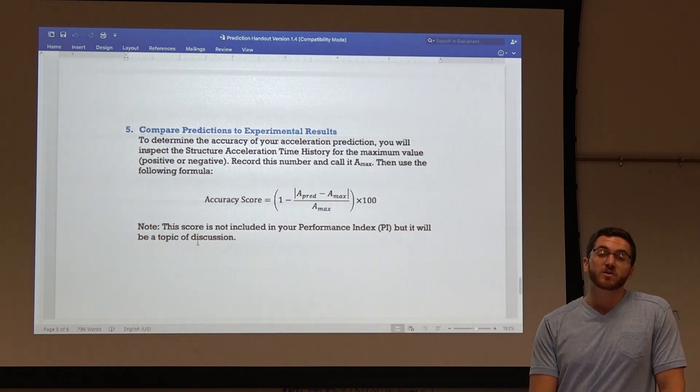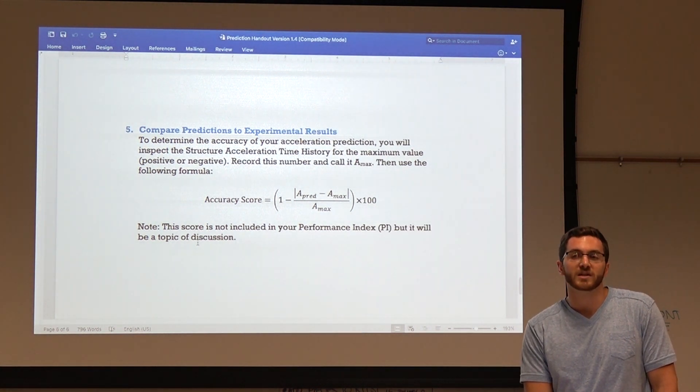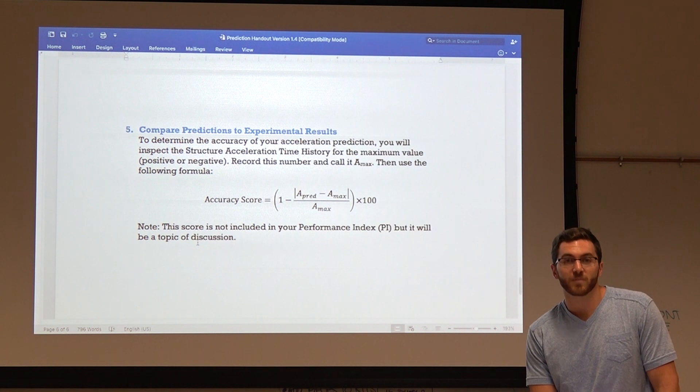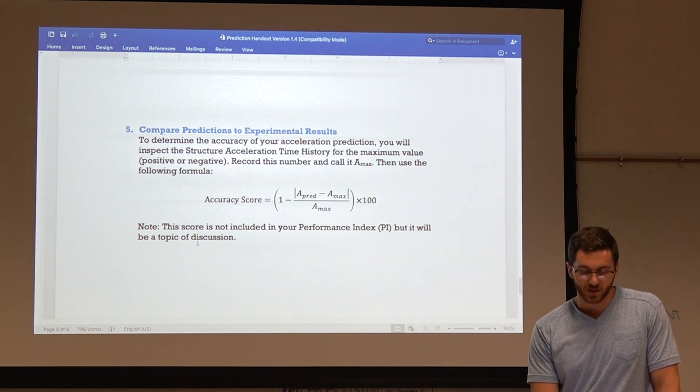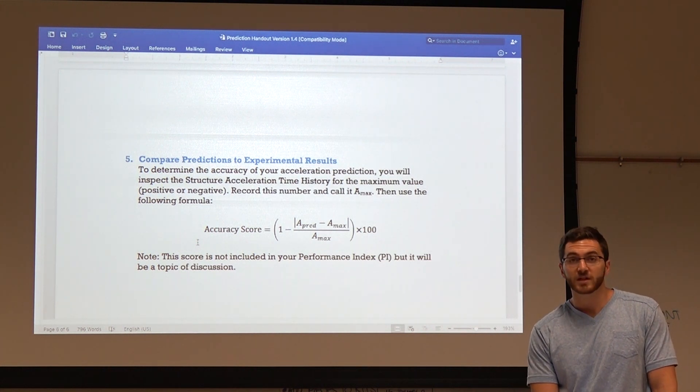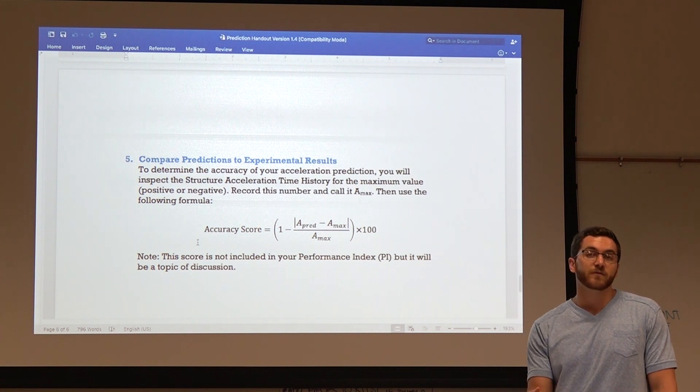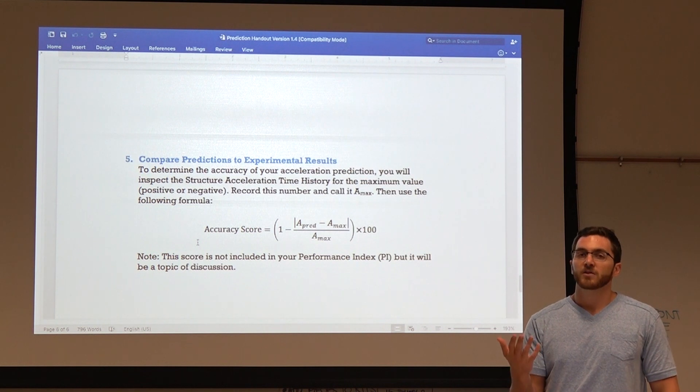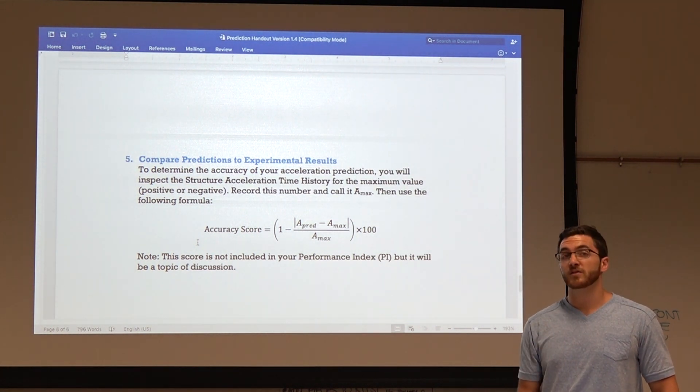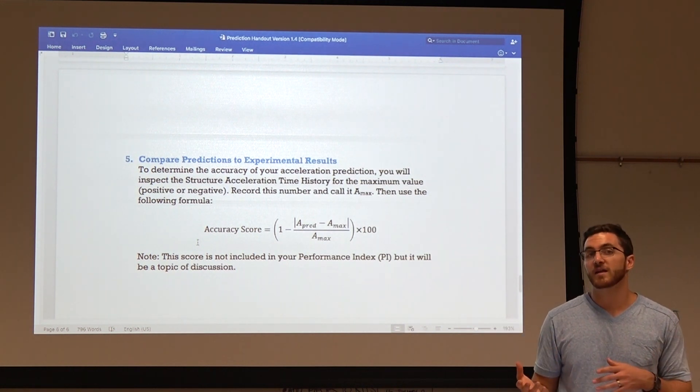We should note that this score is not included in your PI, but it will be a topic of discussion. So, what is your PI? Performance index. Performance index. And why do we use it? Let me rephrase the question. What happens to the team with the highest PI? You win. You win. So, the PI will tell you who wins, which is not in this spreadsheet. The PI will tell you which team wins. But we don't use the accuracy of your predictions to calculate which team wins. The reason we don't do that is because we gave you these graphs, and if we were inaccurate making these graphs, then your results would be inaccurate. So, it doesn't make sense to change your score, your PI score based on these predictions. But it will be a good topic of discussion to understand the difference between what we predict as engineers and what might end up happening in reality. And we can talk about why it's accurate and why it's inaccurate.